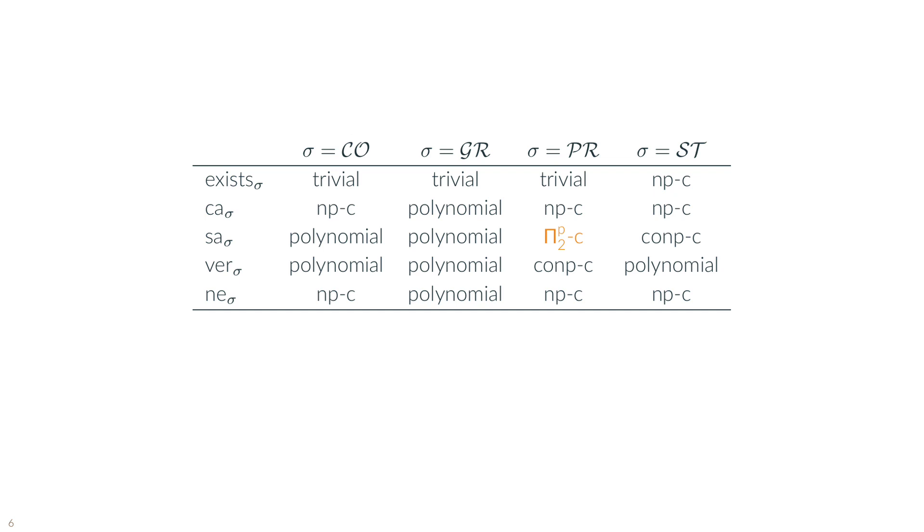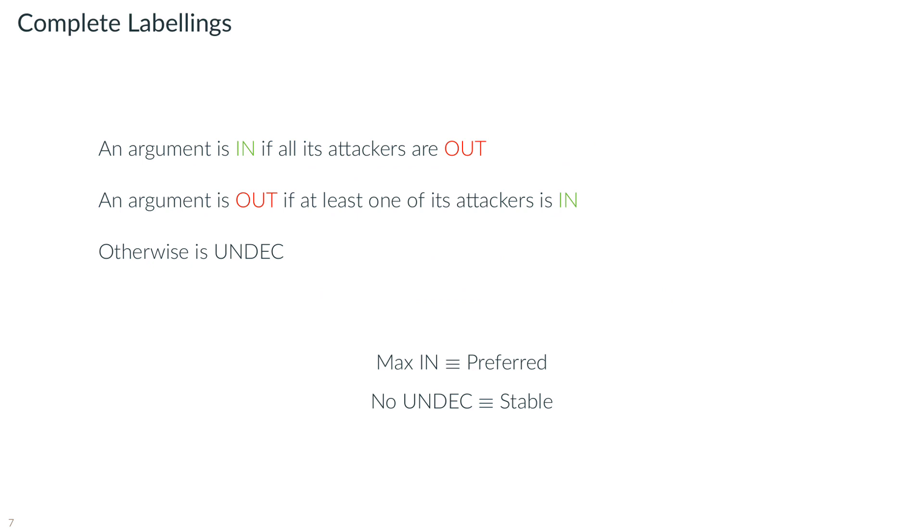However, the preferred semantics also hold a set of useful properties, hence its name, such as they always exist and no preferred extension is a subset of another one.